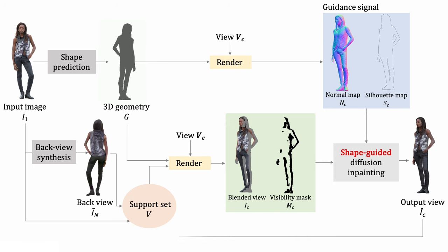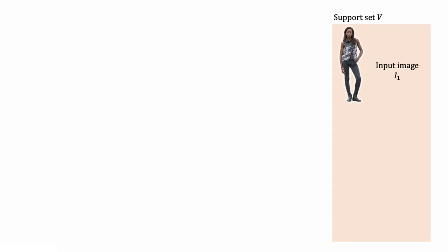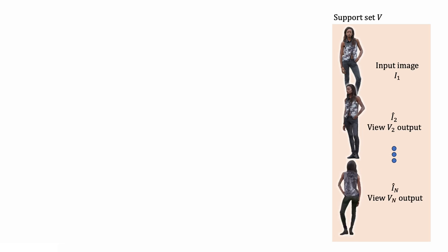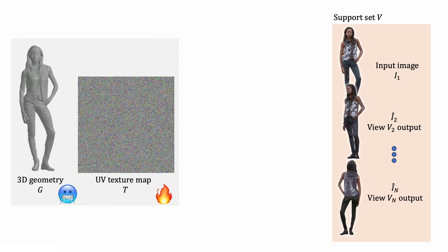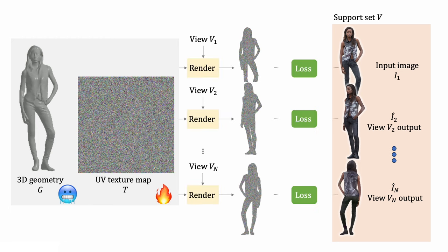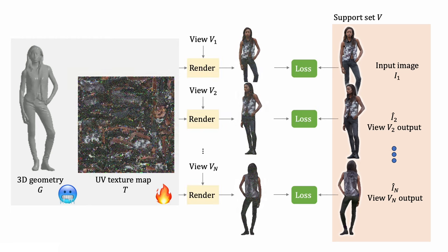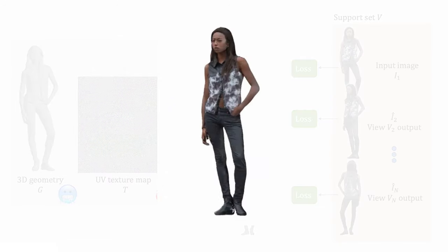We add a synthesized view to our support set and proceed to another viewpoint. We repeat this process until we generate images of multiple viewpoints covering 360 degrees. While we have multi-view images of the person, these images are not fully 3D consistent. Therefore, we optimize the UV texture map via differentiable rendering, giving us a consistent 3D texture model.